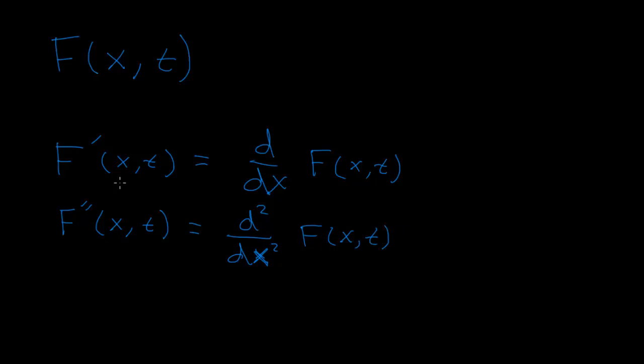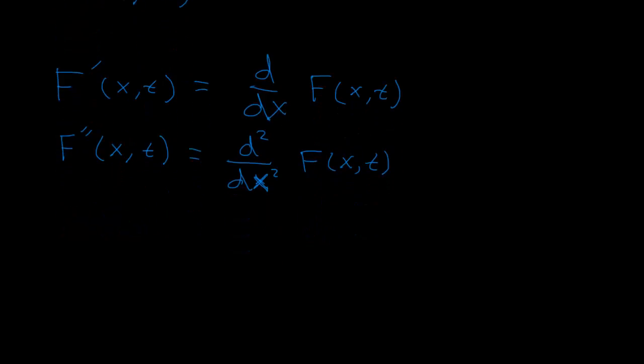Now, similar to this prime, we can also use a dot, and this is something that is pretty common in math and physics. So f dot, which is a function of x and t, is just another way of writing a derivative with respect to time of this function of x and t.